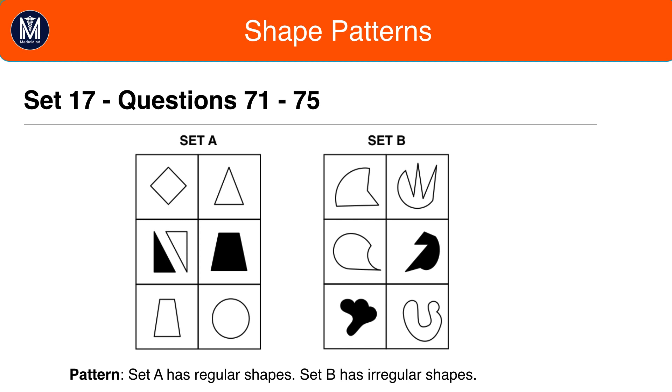Comparing the simplest boxes, box 1 in set A and box 6 in set B, you notice that whilst they are both curved, one is regular whilst the other is irregular. And again, this is a pattern which you can spot by taking a step back and looking at set A and set B as a whole.